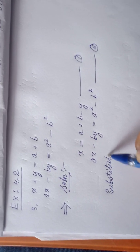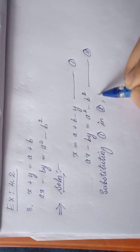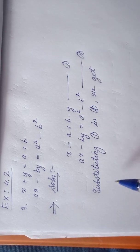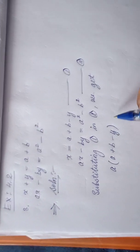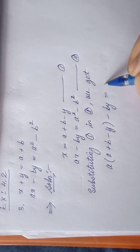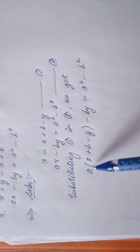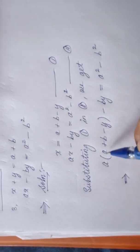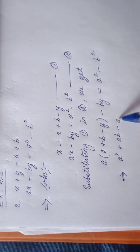So we will substitute equation one in equation two. If I substitute the value of x — that is a plus b minus y — in equation two, I will have: a times (a plus b minus y) minus by equal to a squared minus b squared. So I have to multiply the bracket with a.